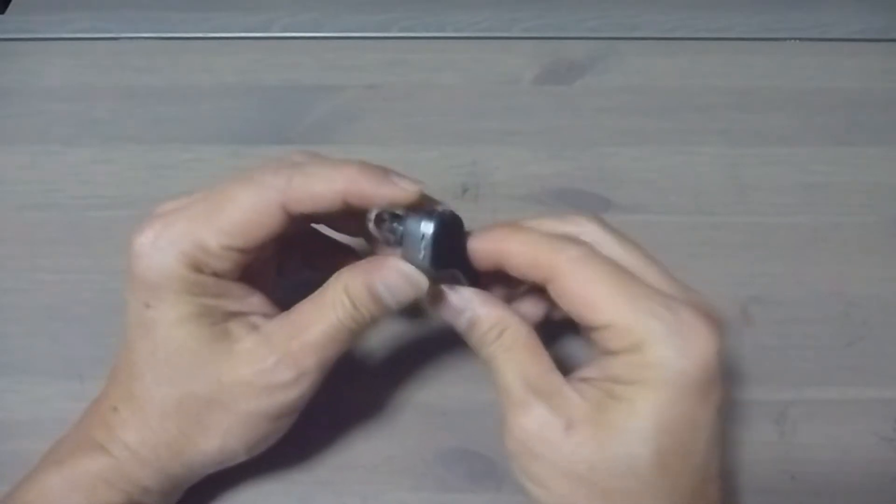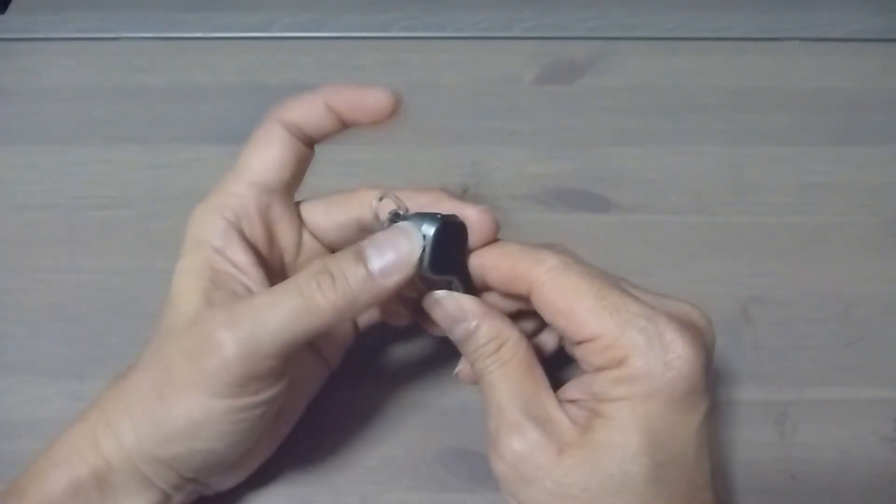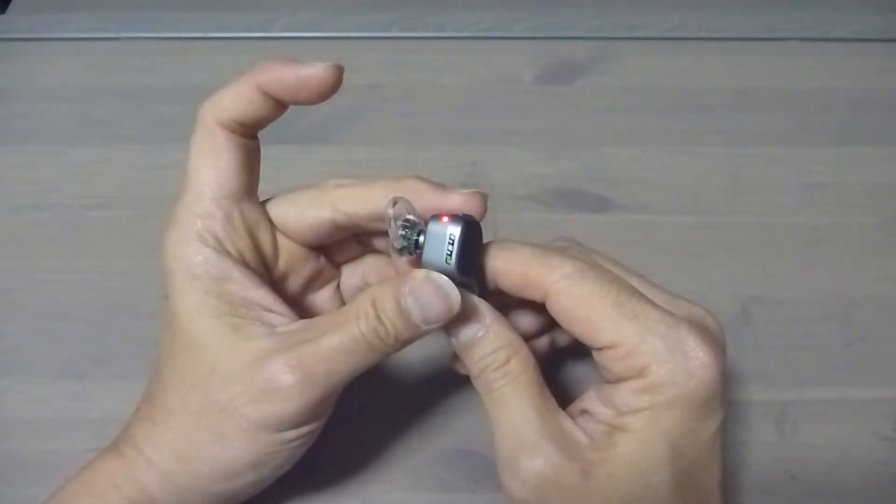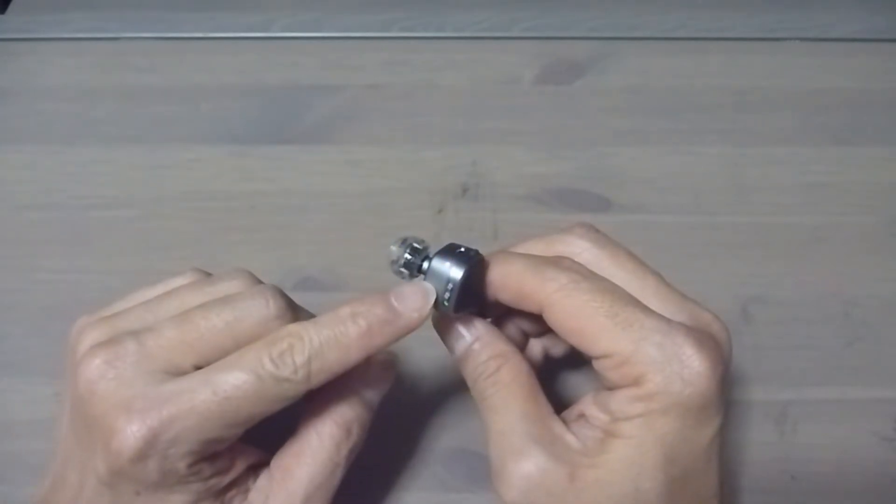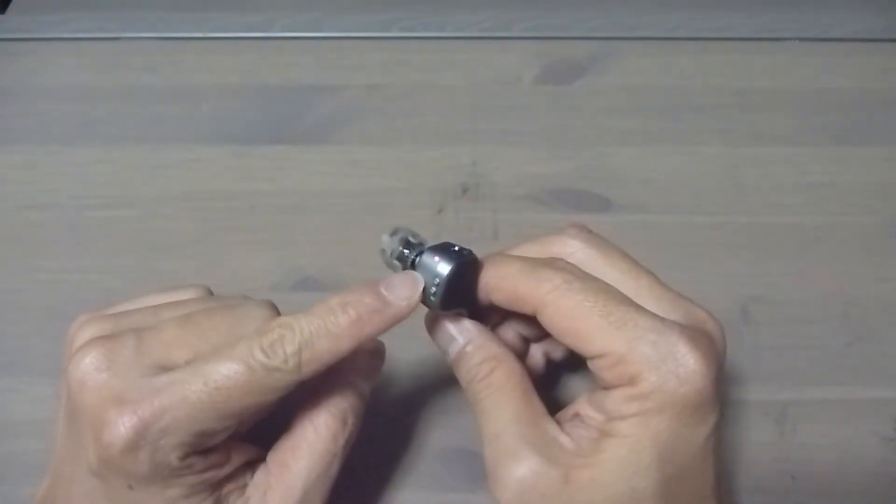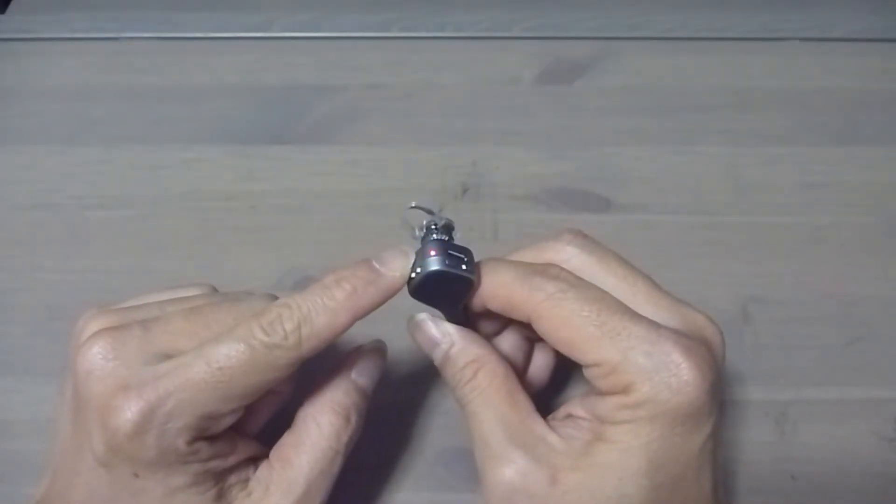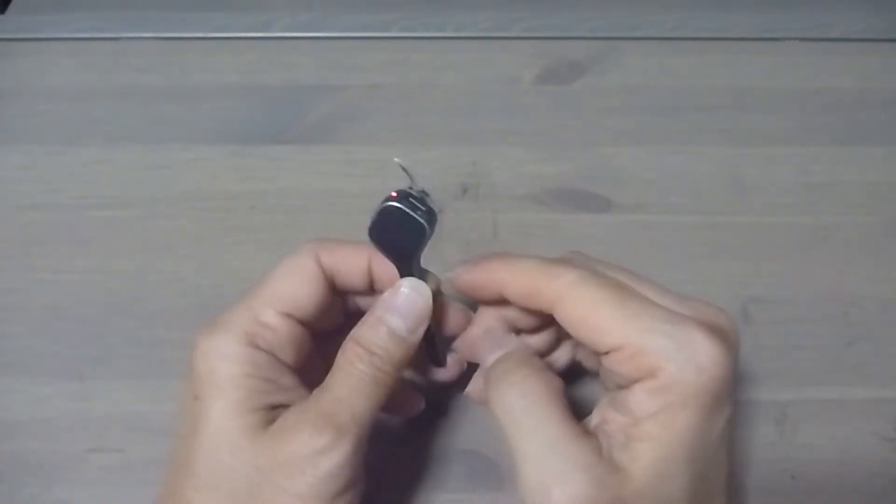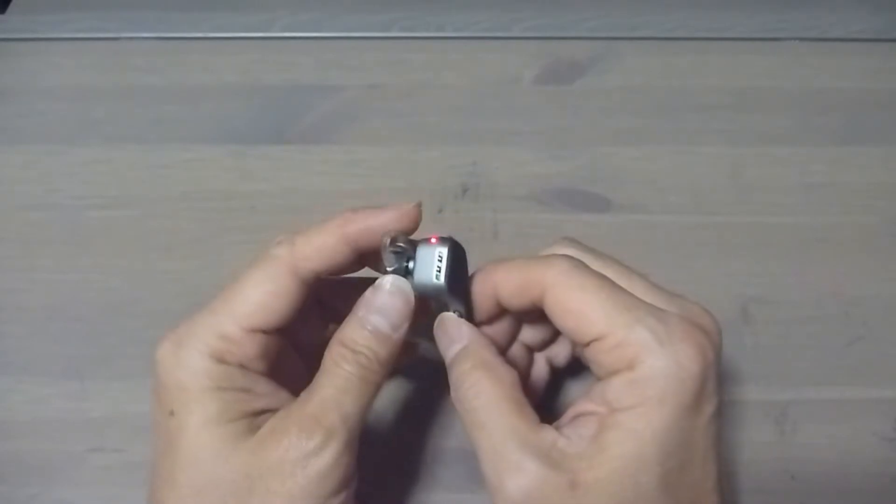So let's turn this unit on. Over here is the power button. You can see that it is blinking red and blue, indicating that it is in the pairing mode. So we are going to turn on our mobile phone and get this paired to our mobile phone.